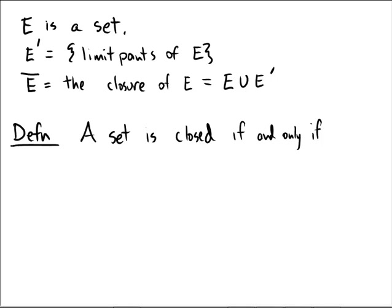But at any rate, if we do consider this to be the definition, then a set is considered to be closed if and only if the closure of E, when you close up E and you throw in all of its limit points, is equal to your original set.